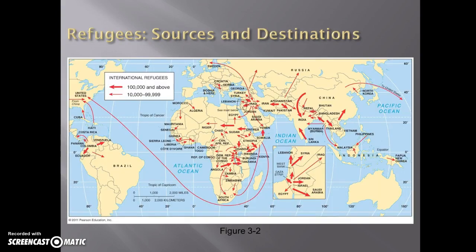Now let's look at refugees. I want you to pause the video and look at this map to see what patterns you can see — it's a level-two question. One of the first things to notice is that this is a flow line map, which is a type of thematic map. Students have noticed that most of the arrows are relatively short, or that they go out of poorer areas or areas with lots of conflict and into areas that are more stable. Those are all great observations to account for when talking about refugees and migration.